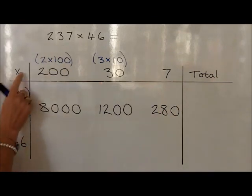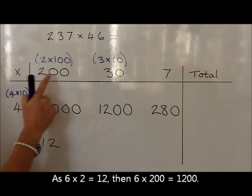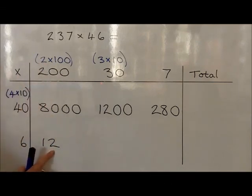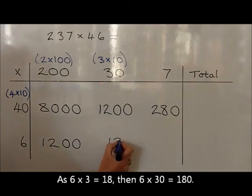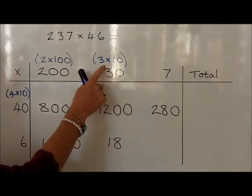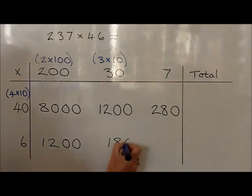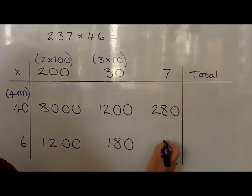Now we look at 6 times 2 and write the answer down as 12. But we're looking at 6 times 200, which is 100 times bigger than 2, so the 12 we make 100 times bigger, which is 1,200. For 6 times 3, this is 18, but we're actually looking at 6 times 30 — 30 is 10 times bigger than 3, so the 18 we make 10 times bigger, which is 180. Finally, we look at 6 times 7: 6 sevens are 42.